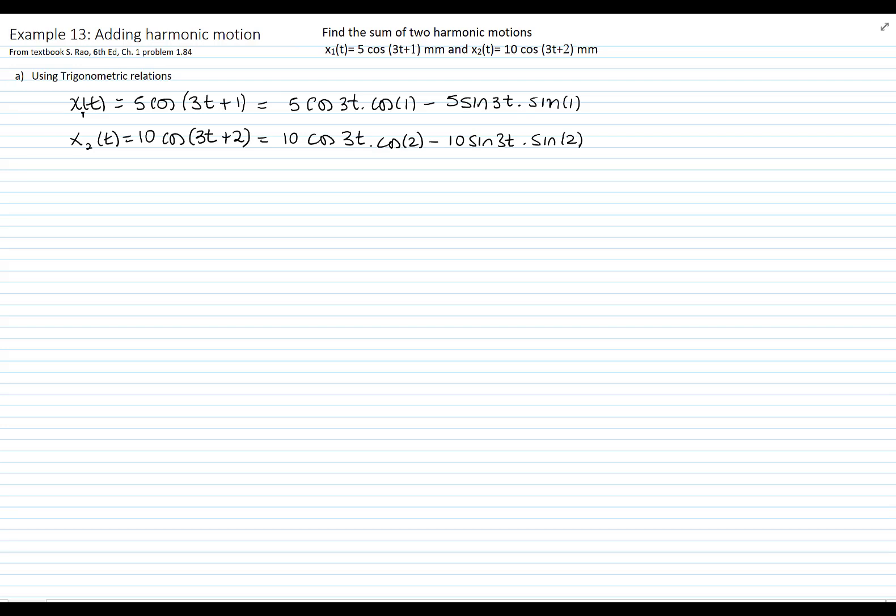If we add those two harmonic motions, we will add the terms that will be multiplying by cosine of 3t. So that's 5 cosine of 1 plus 10 cosine of 2 multiplies cosine of 3t. And the other one will be 5 sine of 1 plus 10 sine of 2 that multiplies sine of 3t.